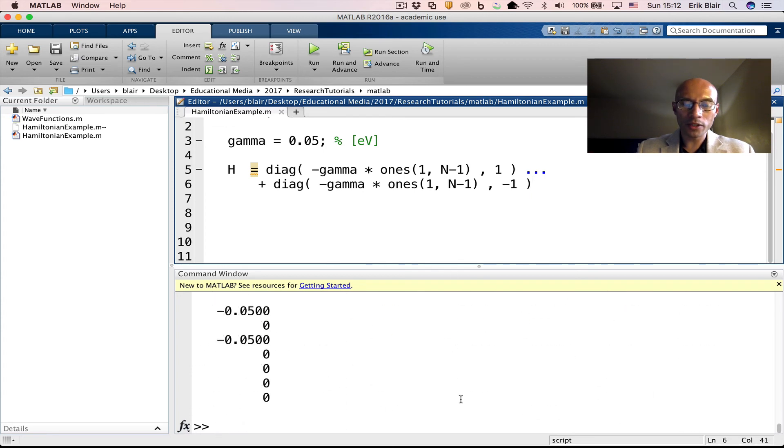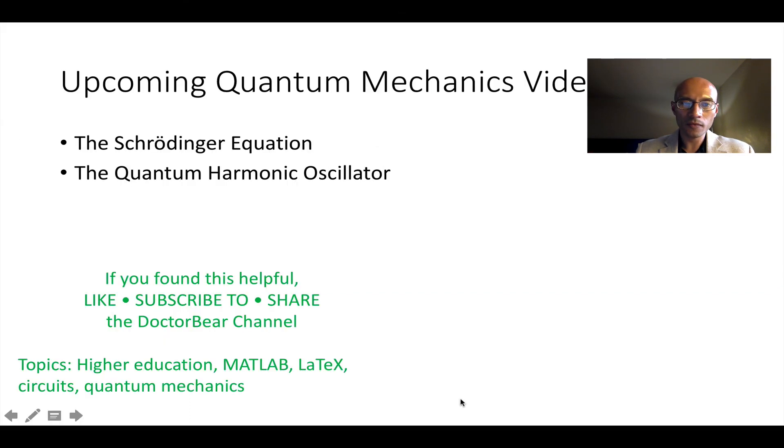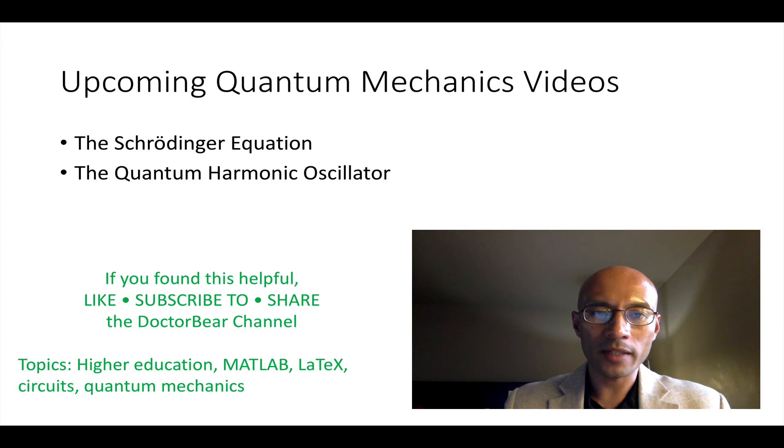In another video, I'm going to show you how we can use the H and we can use the Hamiltonian to calculate the time evolution and we can calculate the stationary states. Those are all very important things in quantum mechanics. So we introduced the concept of an operator and the very important Hamiltonian operator by way of the Schrödinger equation. Next time we'll talk a little more about the Schrödinger equation and how we can apply the Hamiltonian that we showed you how to create in this video.